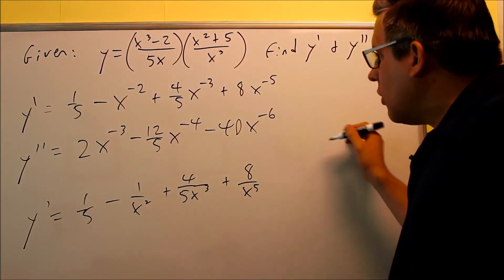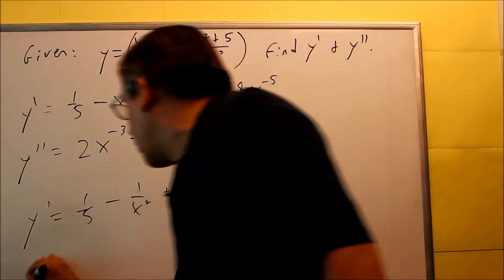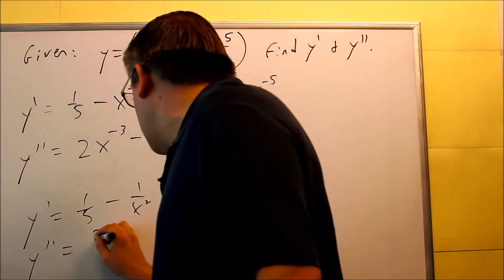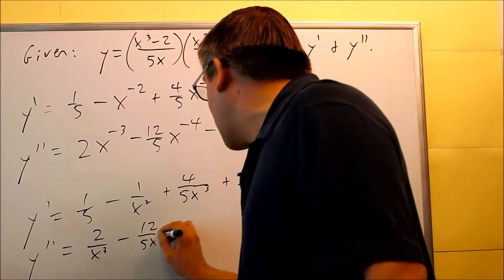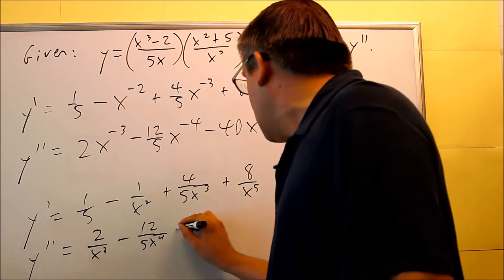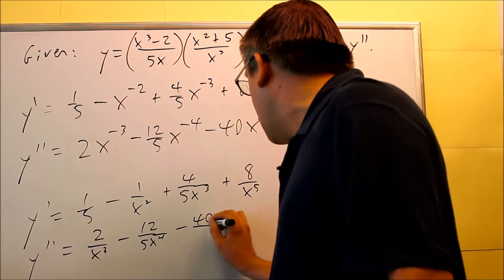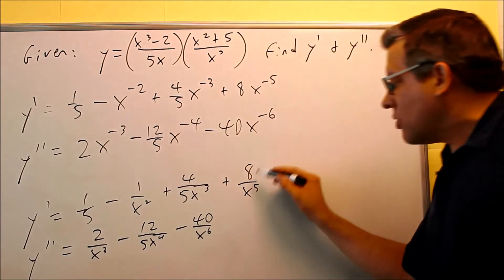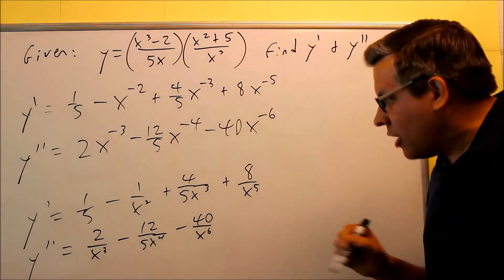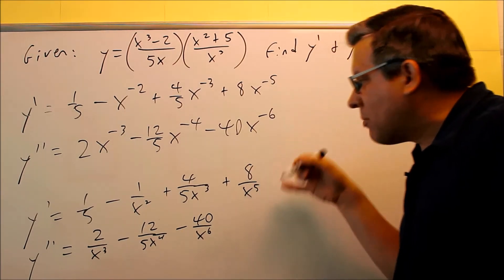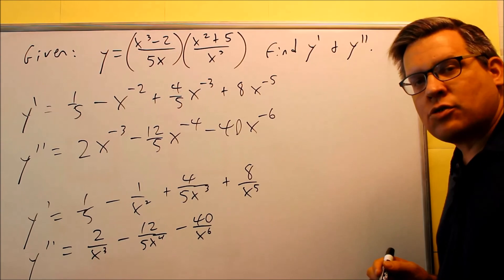And then as far as this one is concerned here, your y double primed, that's going to be 2 over x to the third, minus 12 over 5x to the fourth power, minus 40 over x to the sixth. So these would be the more friendly answers if you're entering them online, then most likely they'll accept these two. So that's your first and second derivatives.